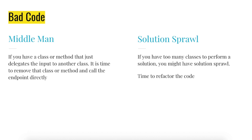If you have a class or method that just delegates the input to another class, it is time to remove that class or method and call the endpoint directly. For example, let's say you have a controller, a service, and a DAO layer. Sometimes what happens is the service layer doesn't do much — it just passes the input from the controller to the DAO layer by calling the method of the DAO layer. Such implementations are not required and can be avoided — cut out the middleman.